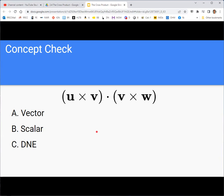Take a second to look at this one first. Notice the bold font does indicate that things are vectors. Determine if this is a vector, a scalar, or does not exist.